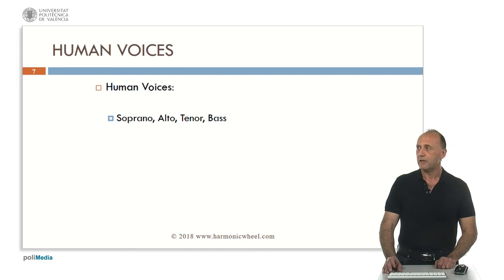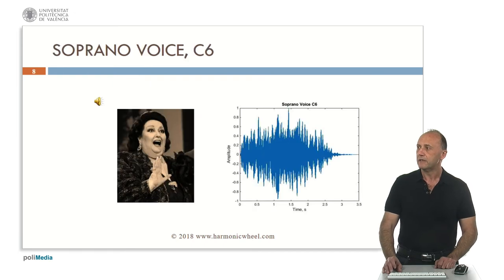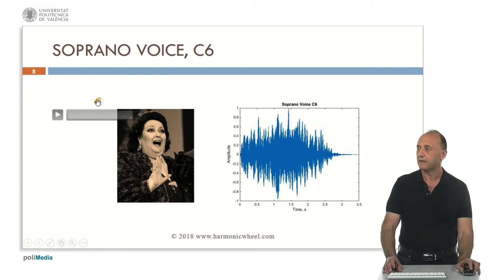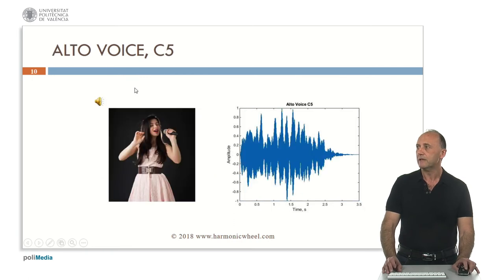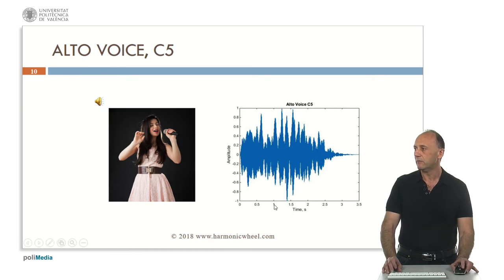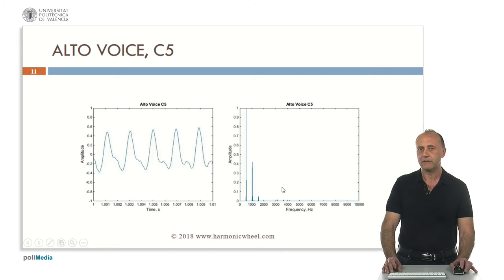Now let's analyze the human voices. This is a soprano, note C6, which is very high. This is the envelope, the waveform and the spectrum. Then the alto voice, C5. This is the envelope, the waveform and the spectrum.